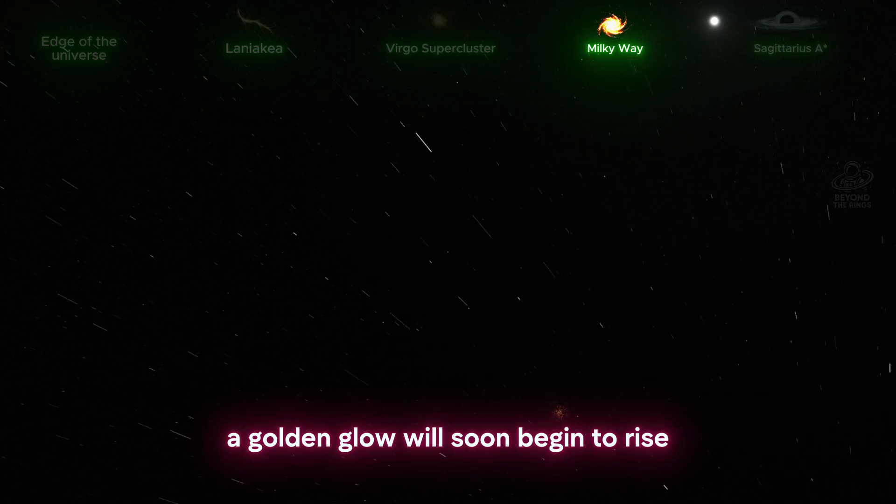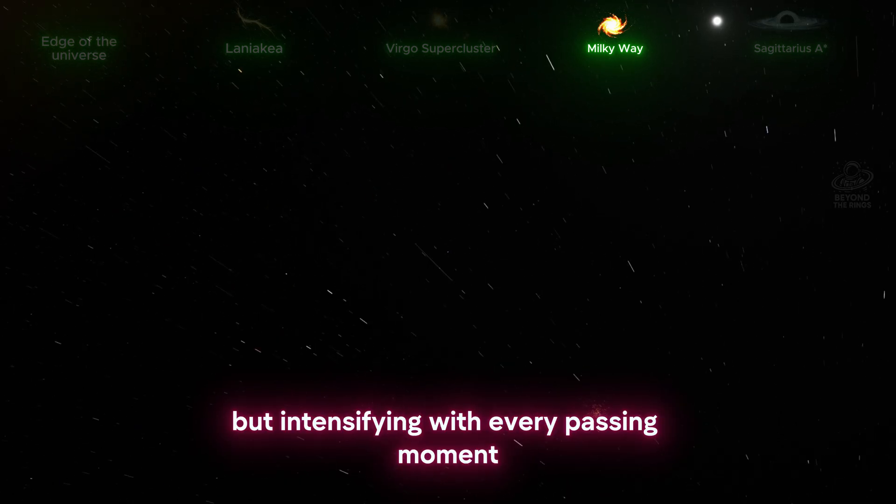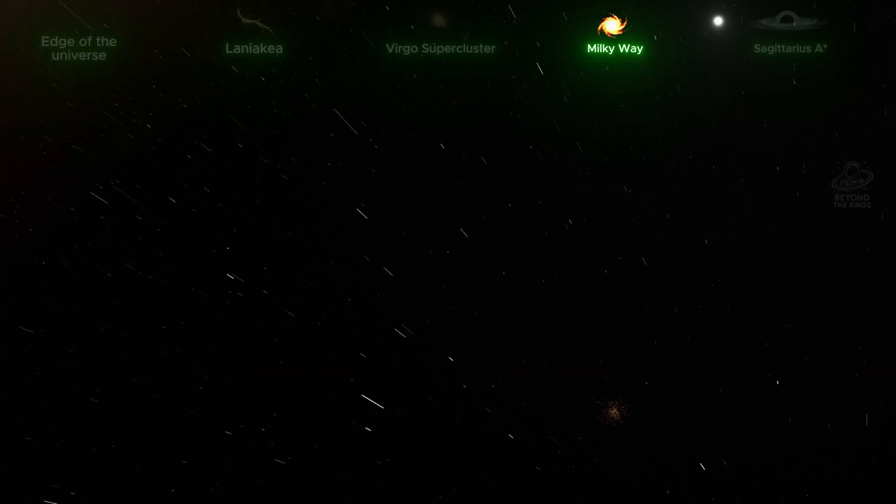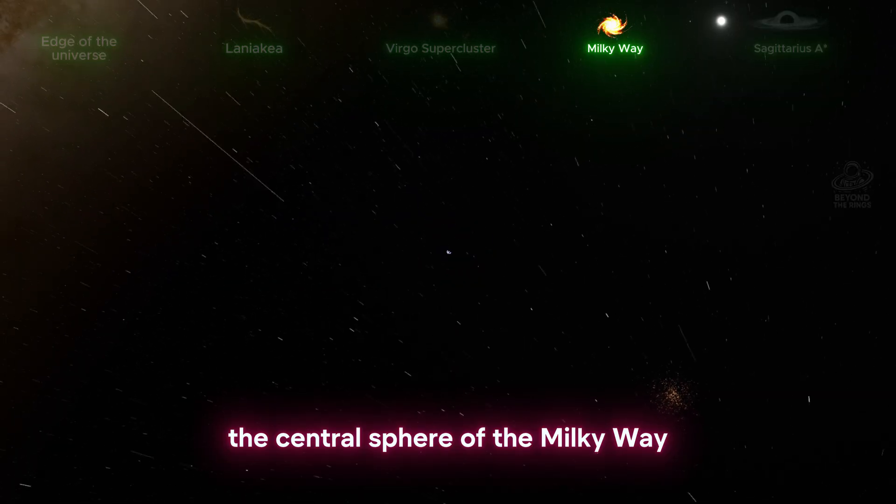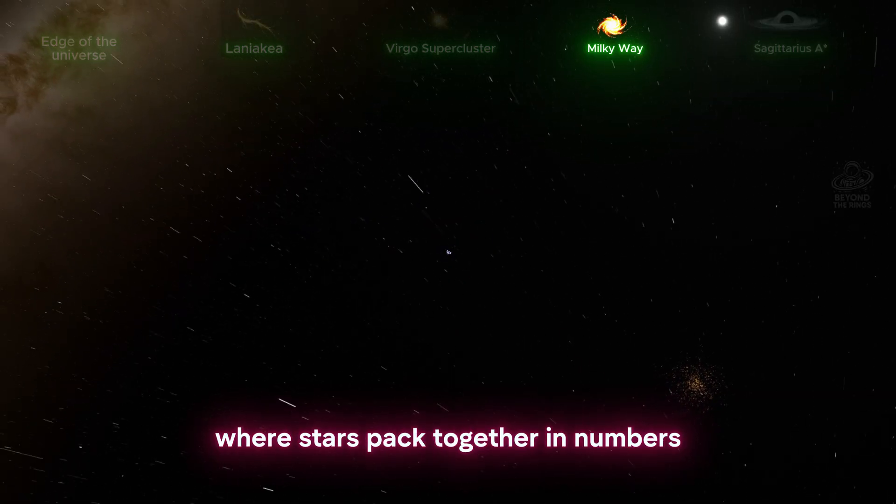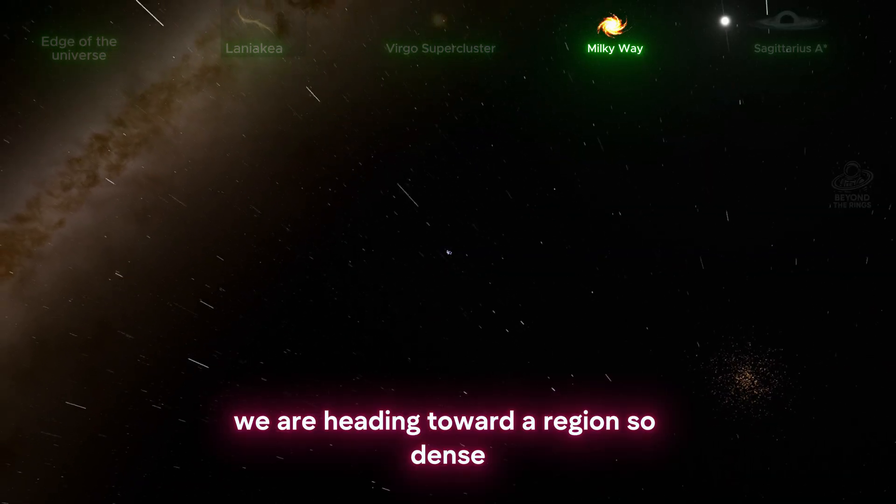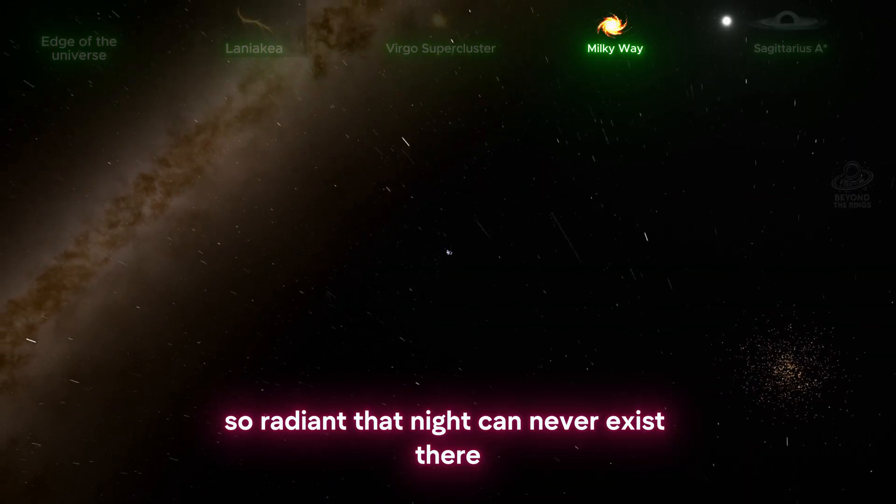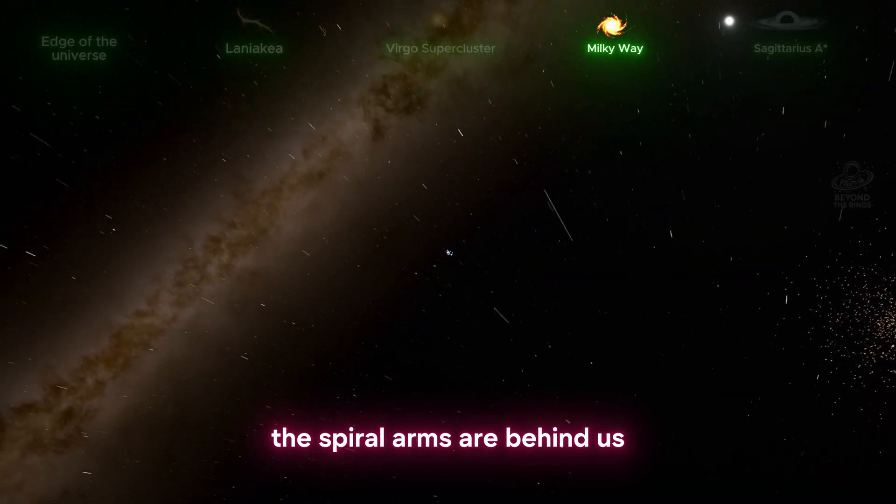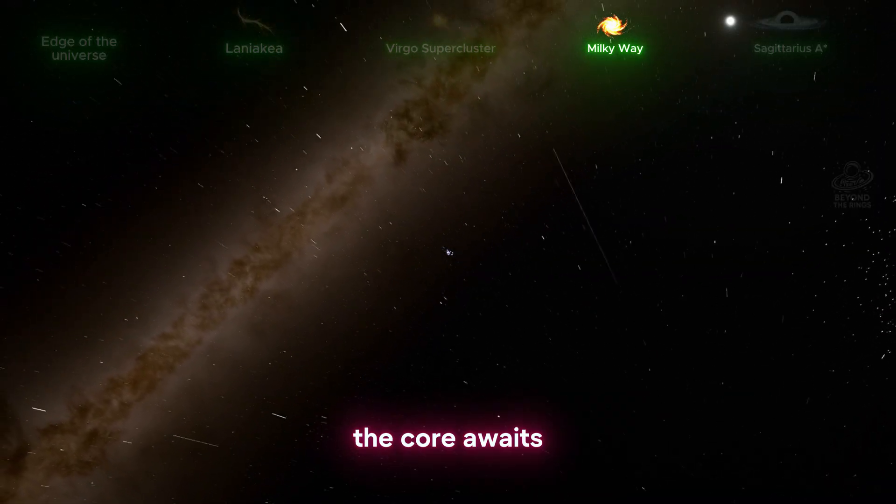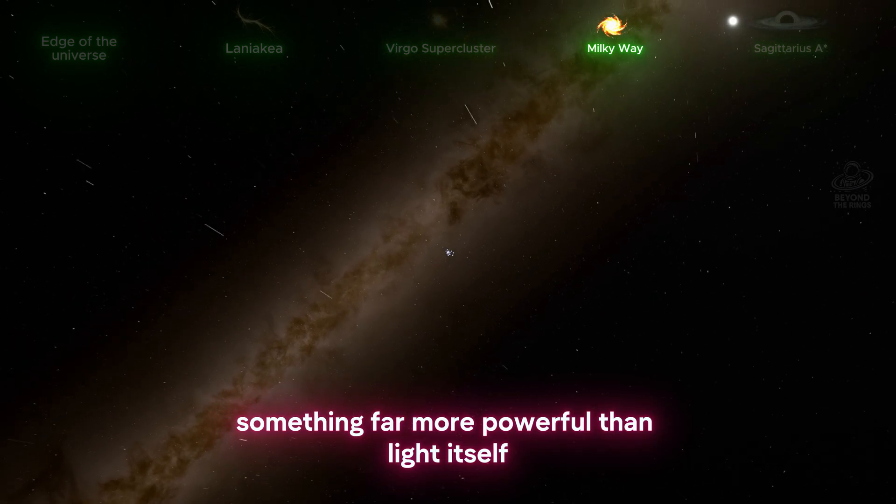Ahead of us, a golden glow will soon begin to rise - soft at first, but intensifying with every passing moment. That light is the galactic bulge, the central sphere of the Milky Way, where stars pack together in numbers almost beyond comprehension. We are heading toward a region so dense, so radiant, that night can never exist there. The spiral arms are behind us. The core awaits. And at its center, something far more powerful than light itself.